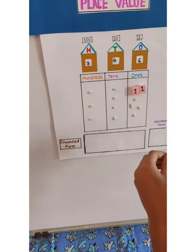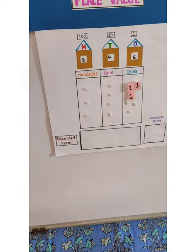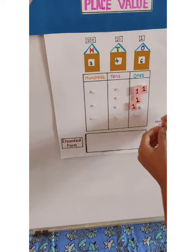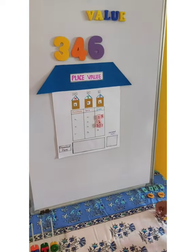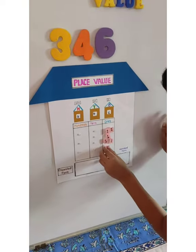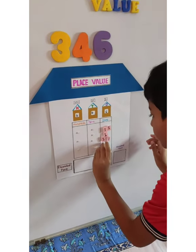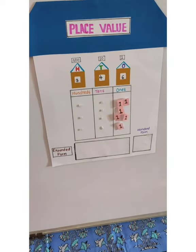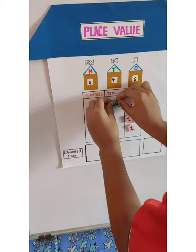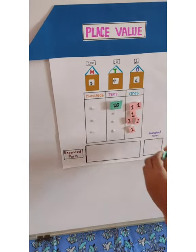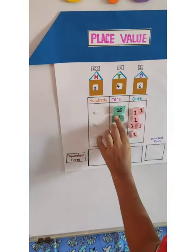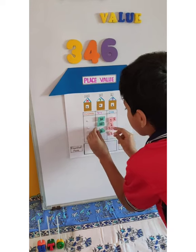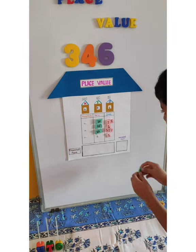For the ones place, counting 3, 4, 5, and last one 6. Now we are taking 10, four times: 10, 20, 30, and last one 40.